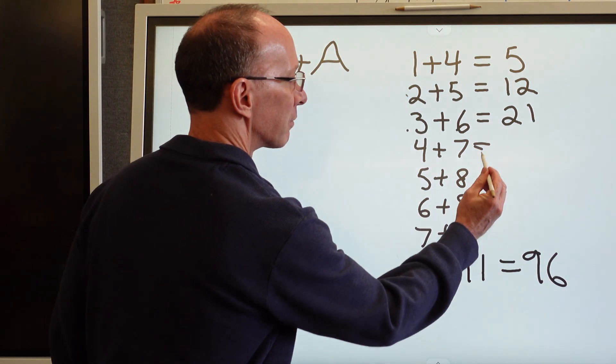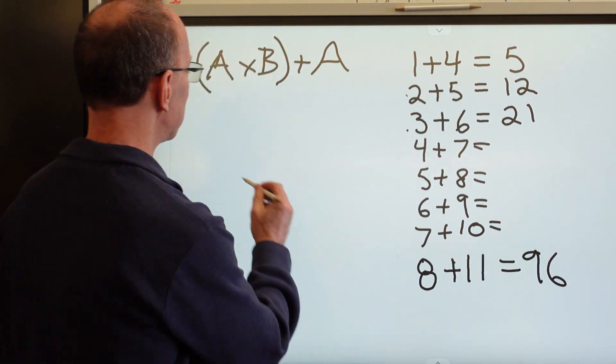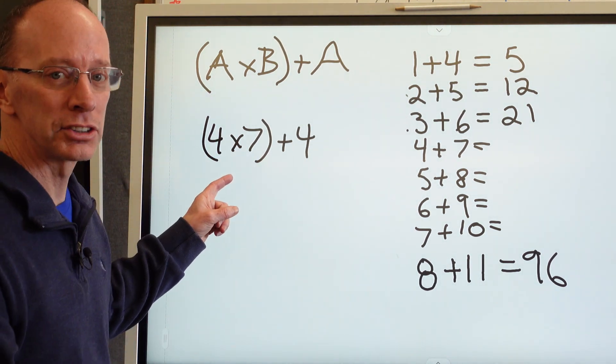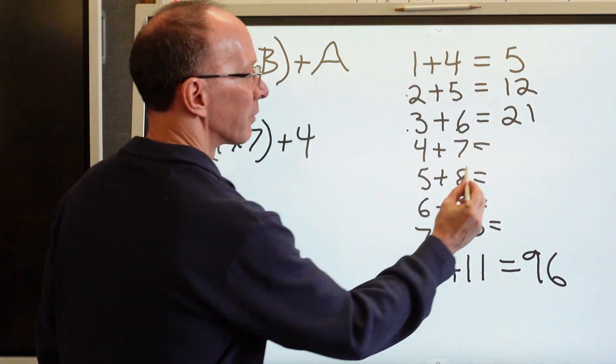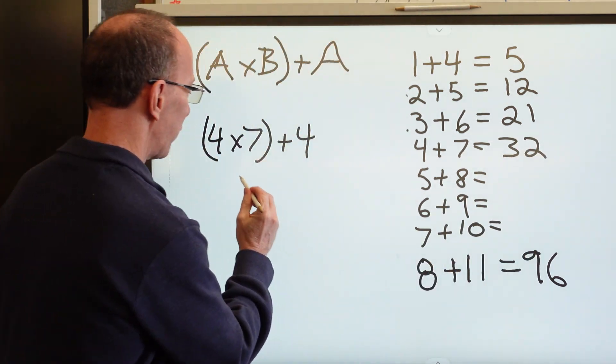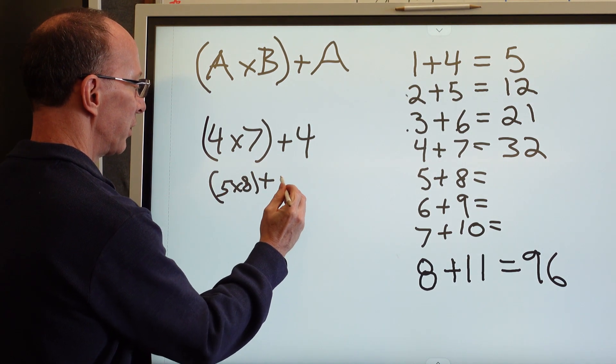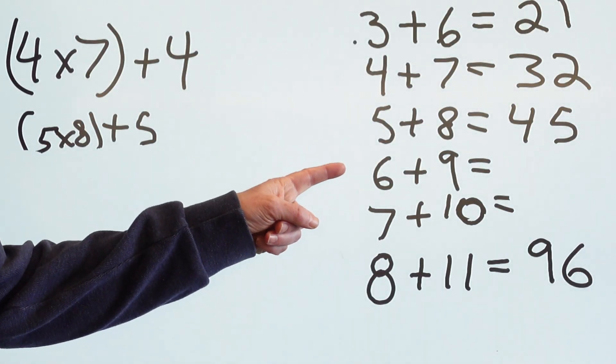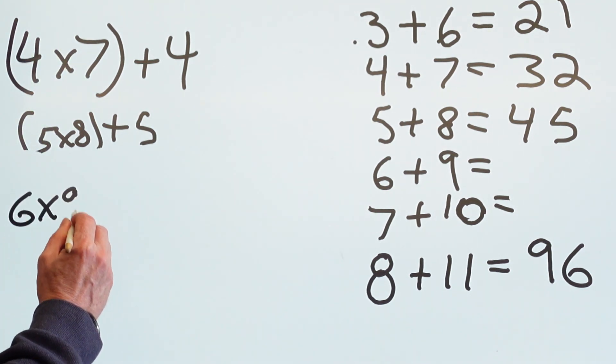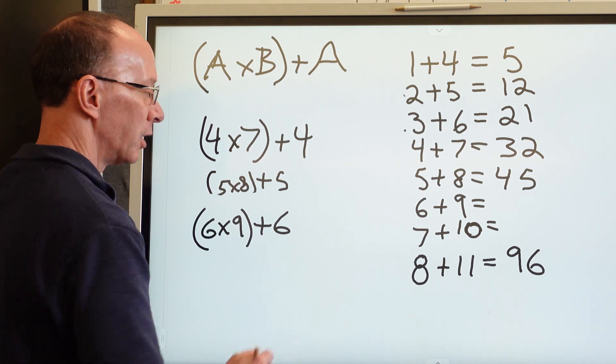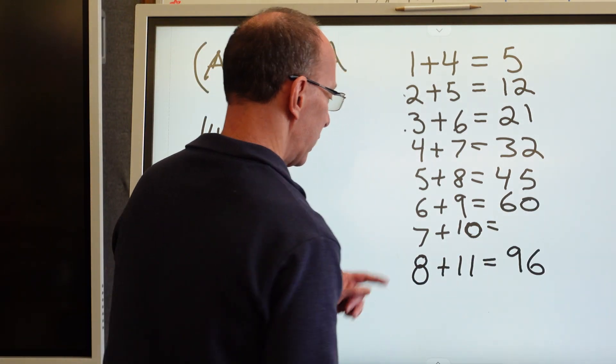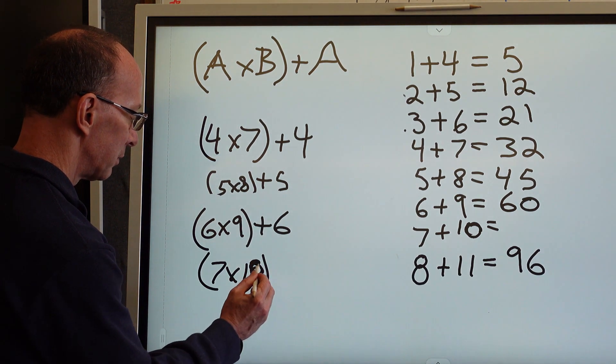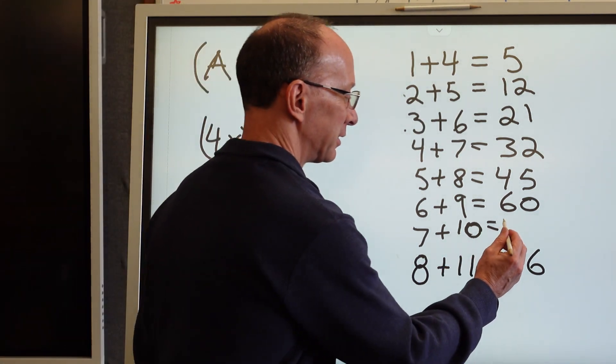So for this one, 4 times 7 plus the 4. 4 times 7 is 28, 29, 30, 31, 32. 5 times 8 plus the 5, we got 40, 45. So then I have 6 times 9 right here, 6 times 9 which is 54, plus the 6, which would be 60. And then I have 7 times 10 which is 70, plus the 7, and that is 77.